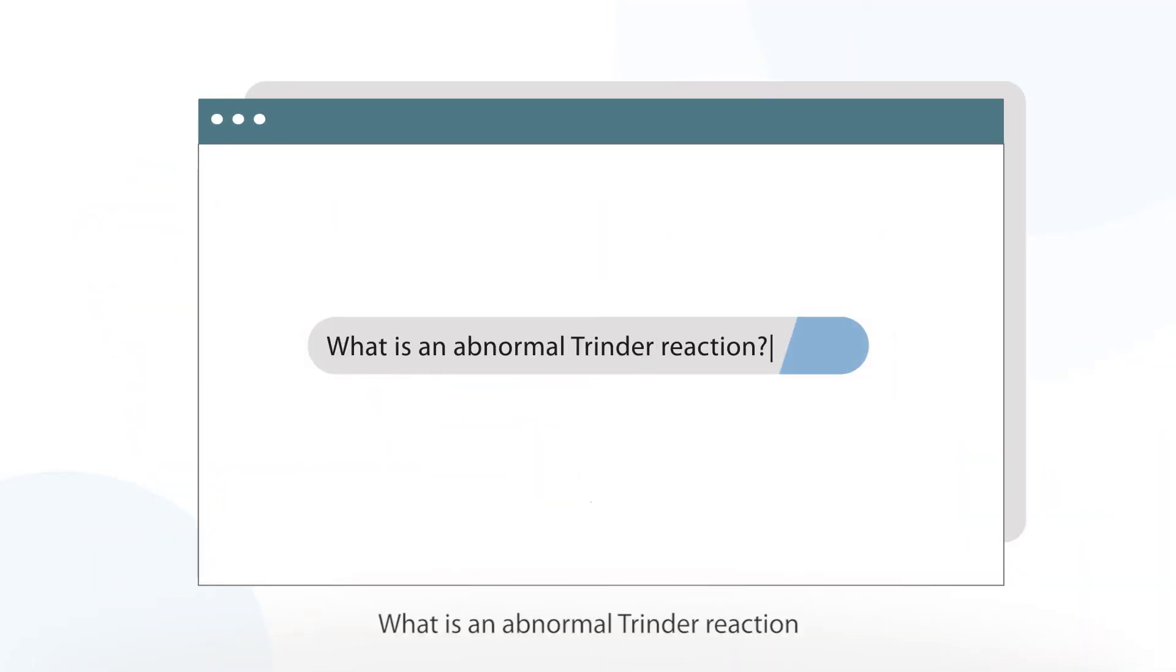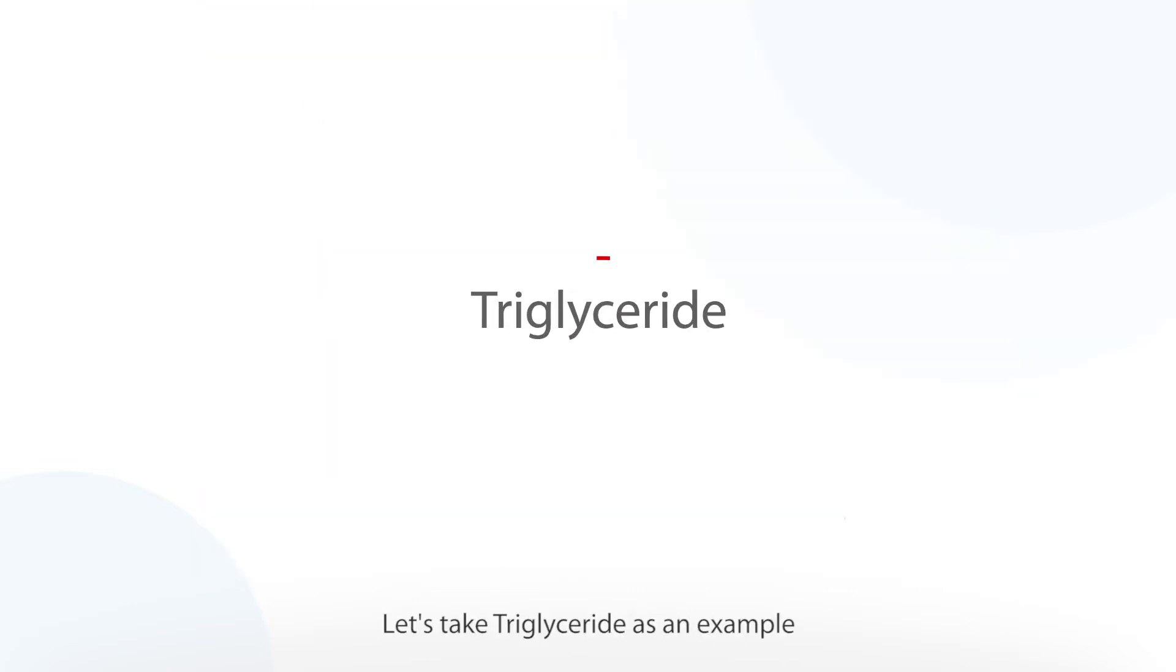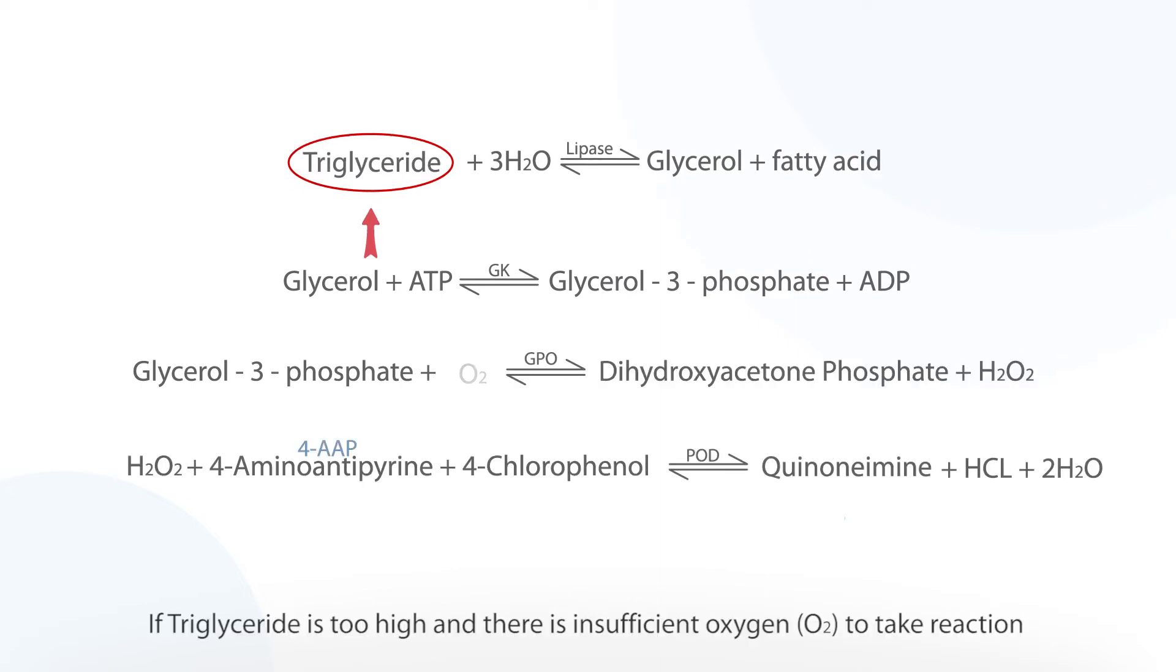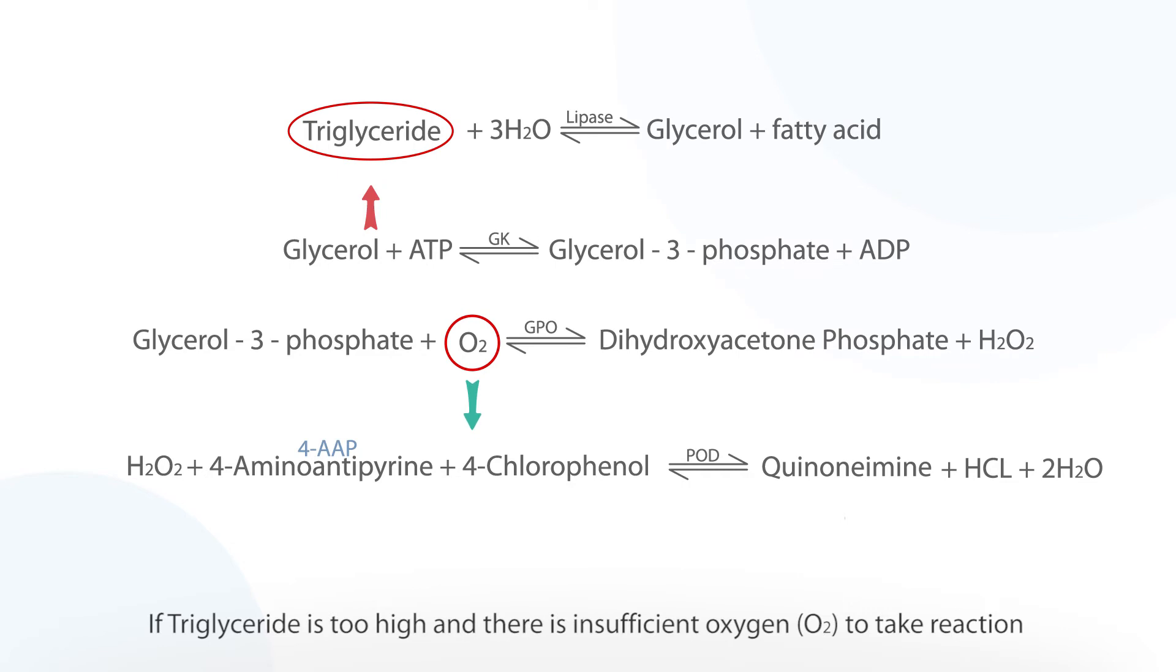What is an abnormal Trinder reaction? Let's take triglyceride as an example and look at its reaction process. If triglyceride is too high and there is insufficient oxygen to take reaction, the final product, quinamine, will first increase and then decrease.